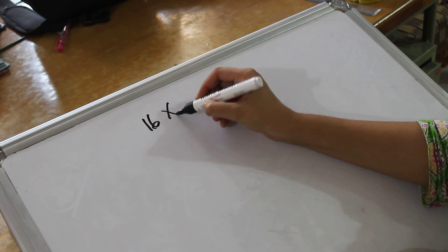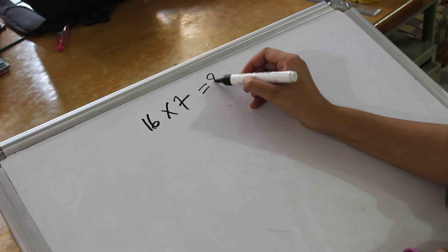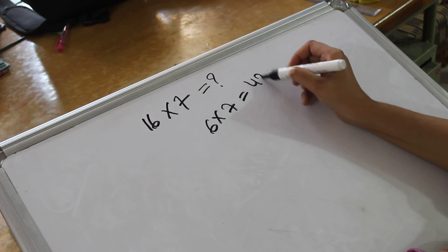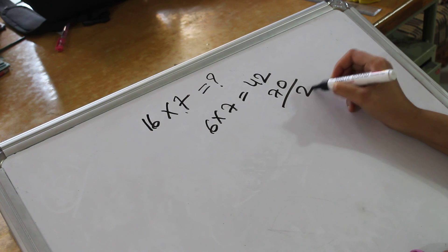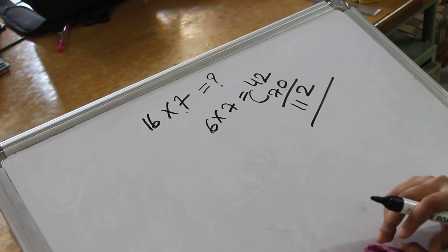Now 16 into 7 is how much? 6 into 7 is 42. Plus 70. That would be 2, 11. This is the value 112.